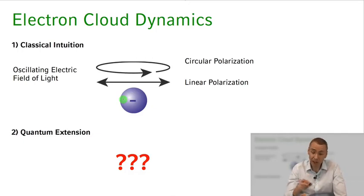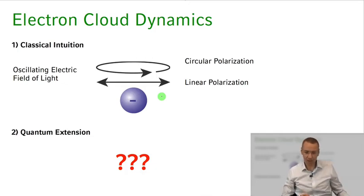If we have circular polarization then we would expect the electron to be driven along a circular trajectory. So how does this correspond to the quantum mechanical calculation? What can we see from quantum mechanics? How does the quantum mechanical system behave?